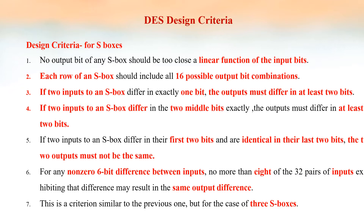There are seven criteria for the S boxes. The first one: no output bit of any S box should be too close to a linear function of the input bits. Second: each row of an S box should include all 16 possible output bit combinations. Third: if two inputs to an S box differ in exactly one bit, the outputs must differ in at least two bits.